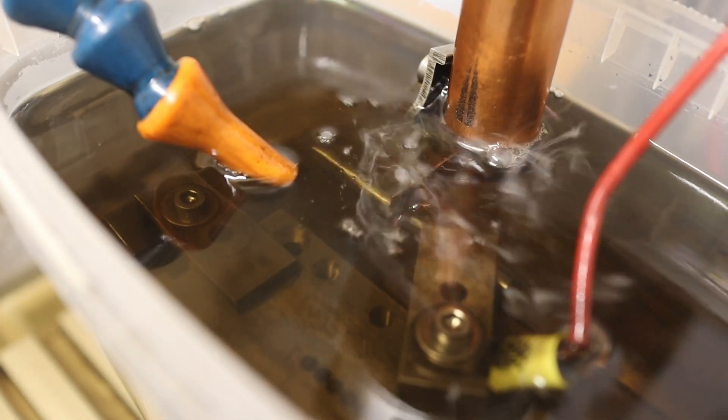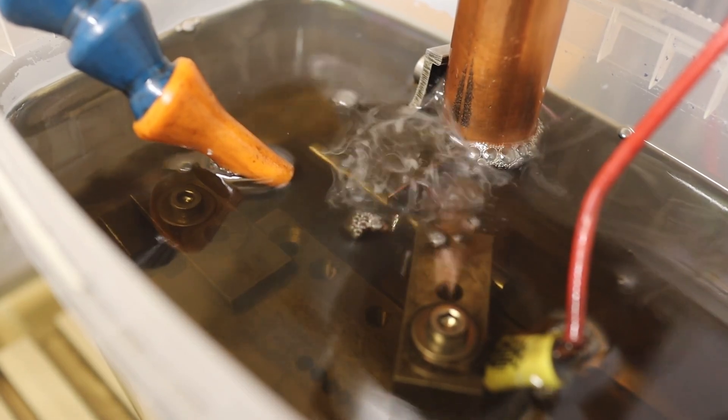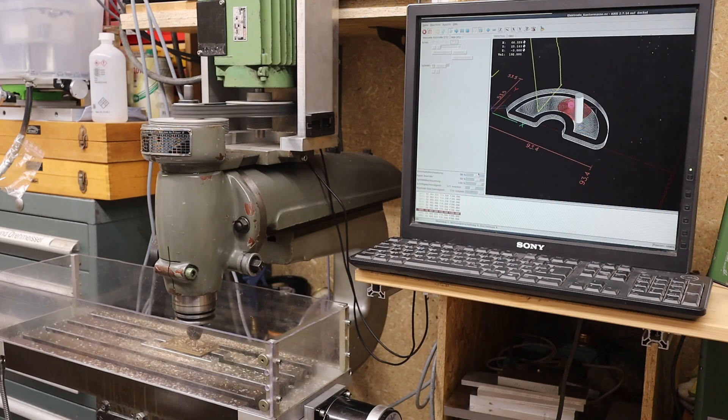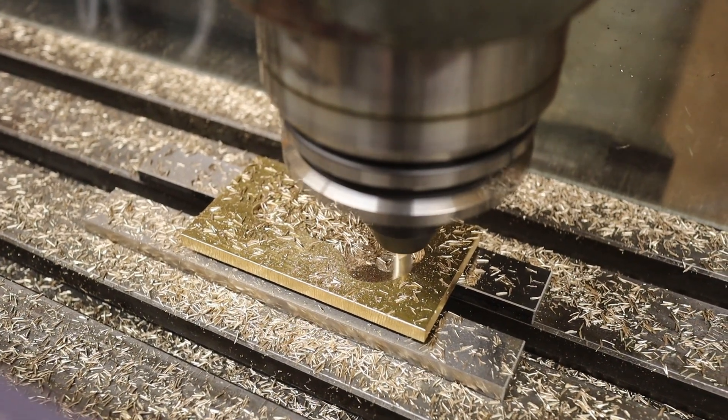Here I can show you exactly how I work with my pulse EDM, built according to the book by Ben Fleming. In the last video I made a brass electrode which is now being used here.